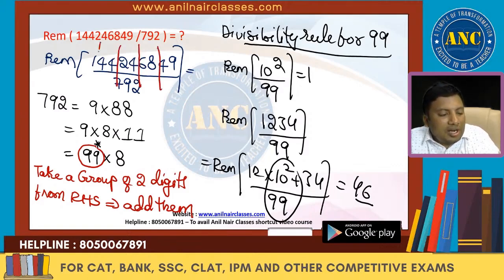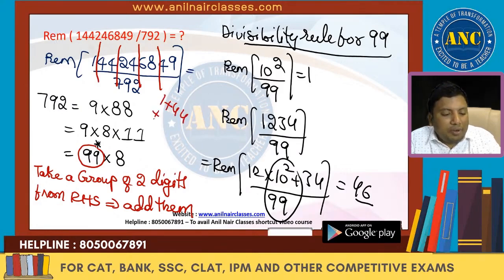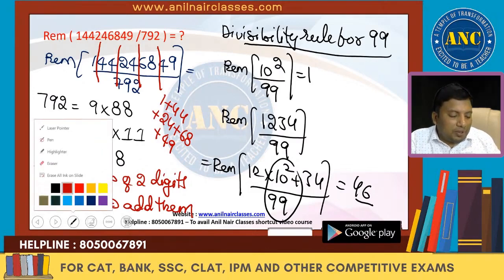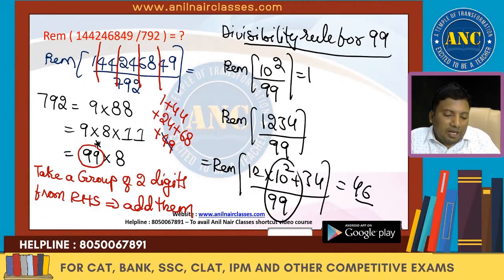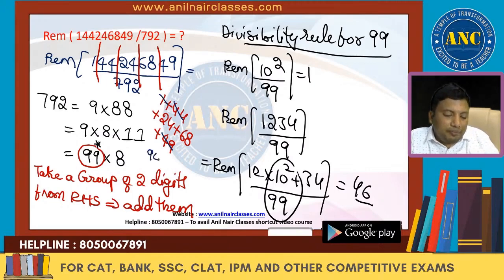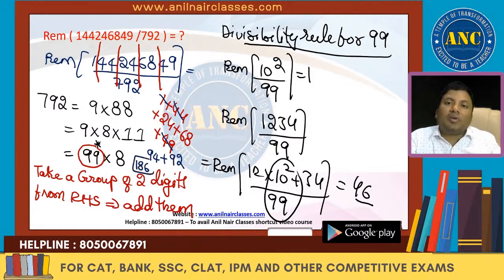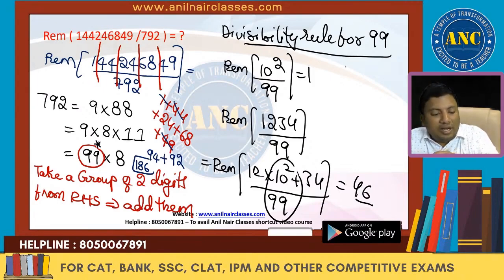Take a group of two digits and add them. For 1442468449, grouping from right: 49 + 68 + 24 + 44 + 1. That gives 49 + 44 = 93, plus 1 = 94, plus 68 + 24 = 92. So total is 186. 99 × 1 = 99, so the remainder when divided by 99 is 87.